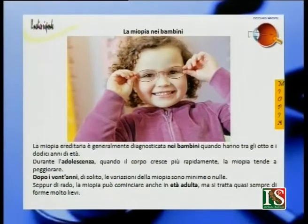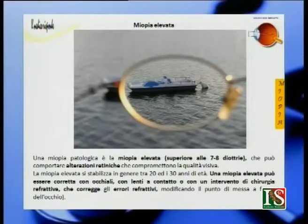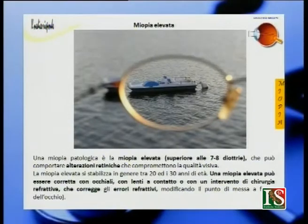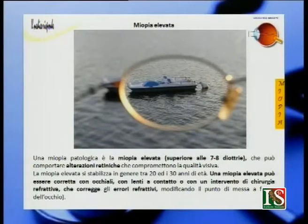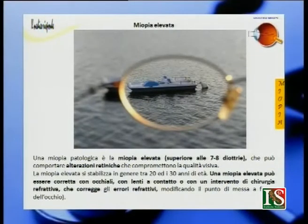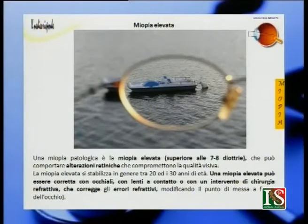Una miopia patologica è la miopia elevata, cioè superiore a 7-8 diottrie. Può comportare alterazioni retiniche e quindi compromettere completamente la qualità visiva. La miopia elevata si stabilizza in genere tra i 20 e i 30 anni di età. Può essere corretta con occhiali, con lenti a contatto o con un intervento di chirurgia refrattiva che modifica il punto di messa a fuoco dell'occhio.